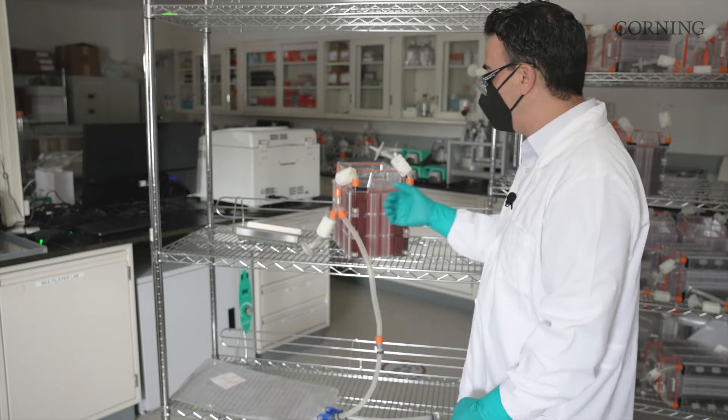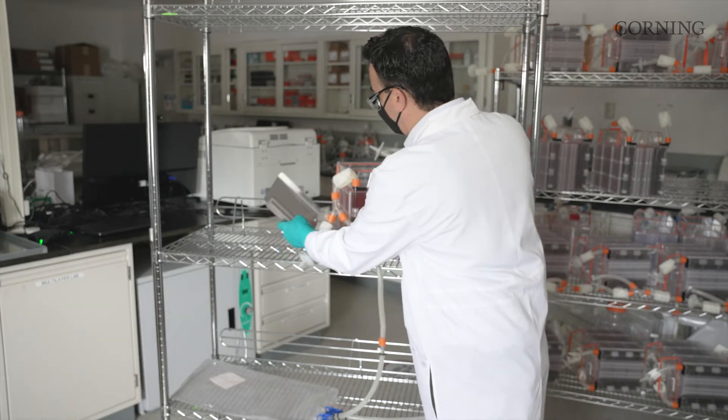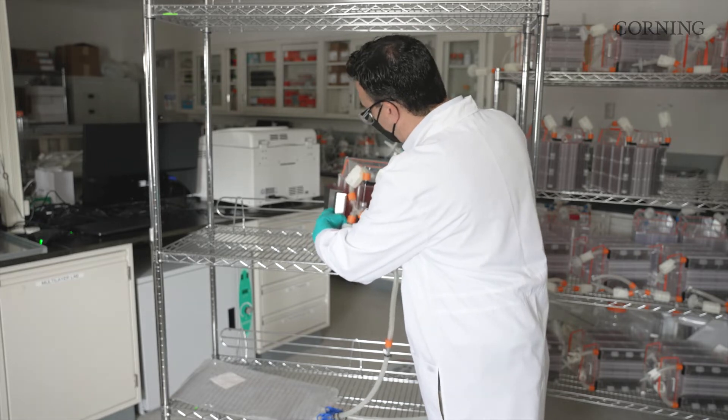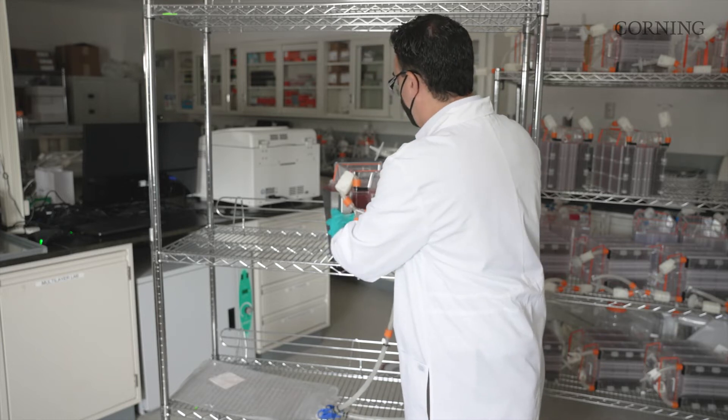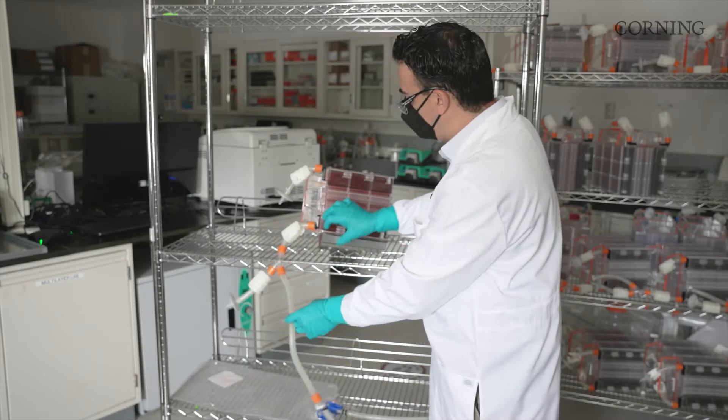The next step is to go back to your nest stainless steel accessory. We're going to lock this in using the registration tabs. We'll lift up, dock the registration tabs onto the hyperstack, move your tubing out of the way, and then lay this down on its side.